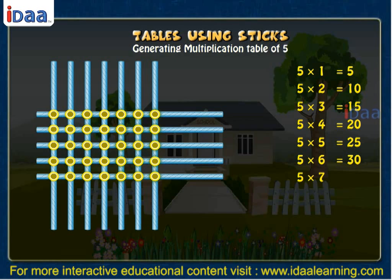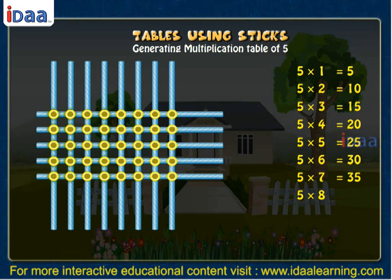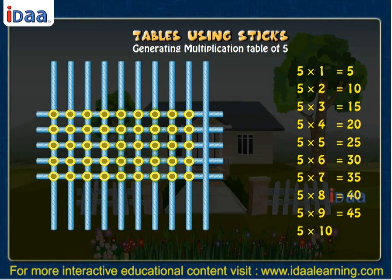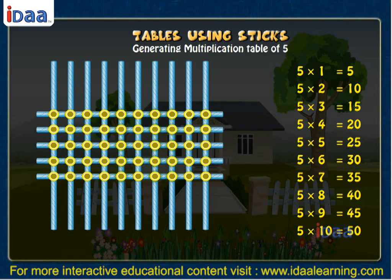If we put 8 sticks vertically, we shall get 40 points of intersection. If we put 9 sticks vertically, we shall get 45 points of intersection. If we put 10 sticks vertically, we shall get 50 points of intersection. That's the multiplication table of 5.